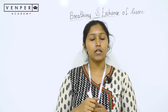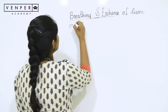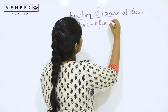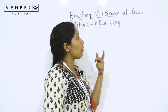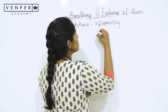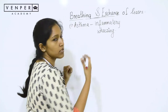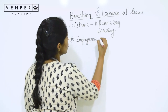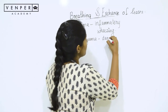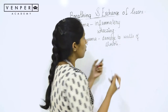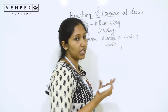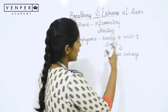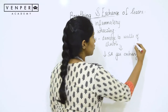Let us look at some diseases associated with the respiratory system. The first is asthma — an inflammatory disease due to inflammation of the bronchus and bronchioles, which causes wheezing and difficulty in breathing. The next is emphysema, where there is damage to the walls of alveoli, decreasing the overall surface area available for gaseous exchange, making breathing difficult. This is mainly due to cigarette smoking.